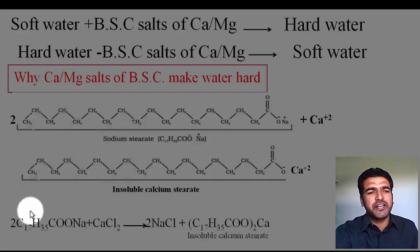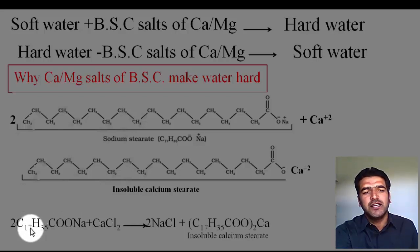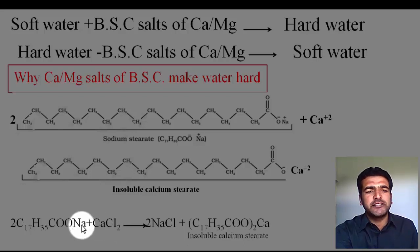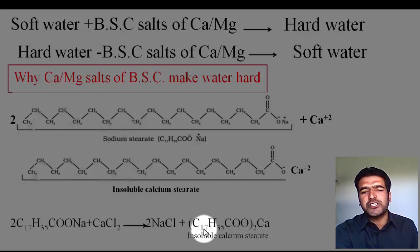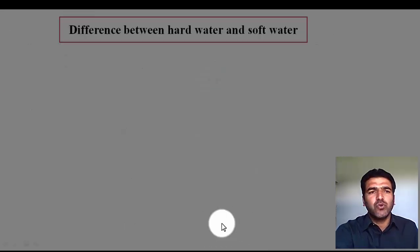We can write down the reaction: C17H35COO·Na — that is the sodium salt of stearic acid. Once added to hard water containing calcium salts, for example calcium chloride, the calcium ions replace the sodium ions and you get calcium stearate, which is an insoluble compound. It gets deposited in the form of a precipitate.